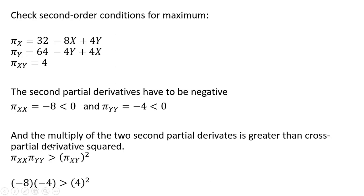And then one further thing we need to check in terms of the second-order conditions to show that we're at a maximum is that the multiple of the two second-partial derivatives needs to be greater than the cross-partial derivative squared. The cross-partial derivative is 4, so if we square that at 16, 32 is greater than 16.